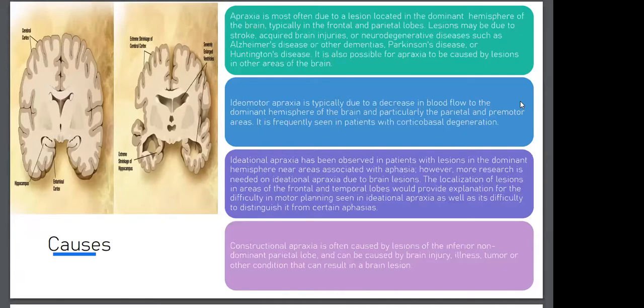Constructional apraxia is often caused by lesions of the inferior non-dominant parietal lobe. It can be caused by brain injury, illness, tumor, and other conditions that can result in brain lesions.